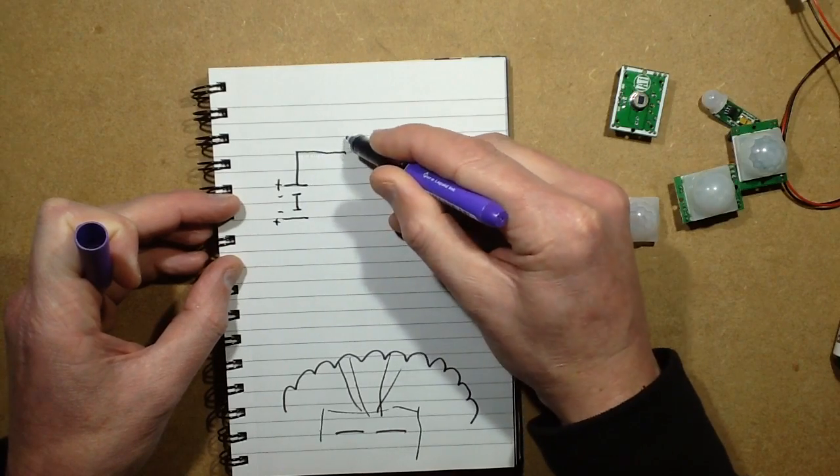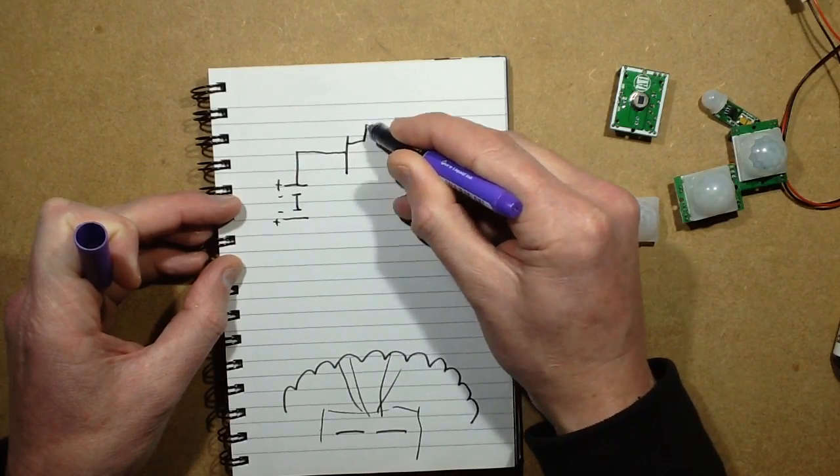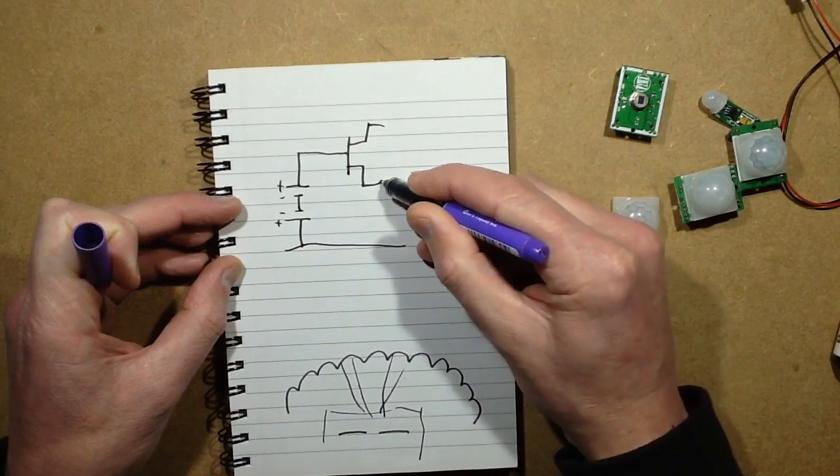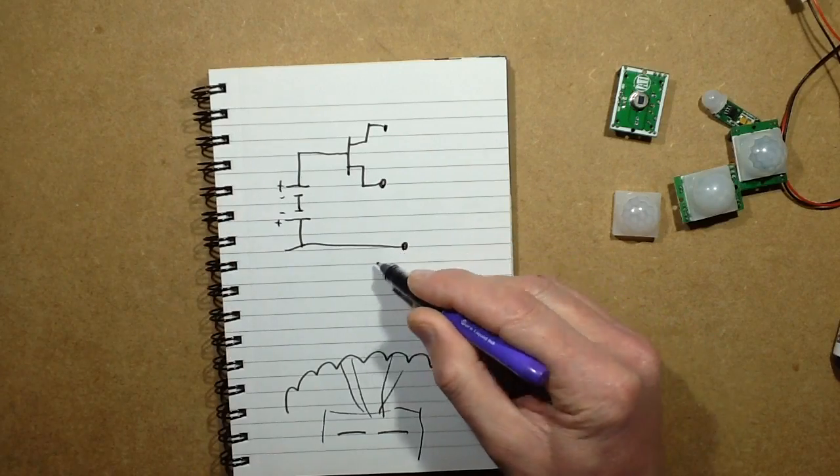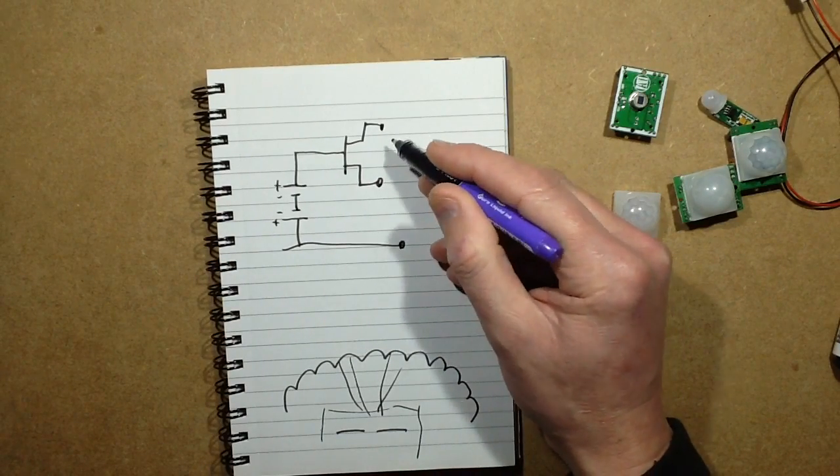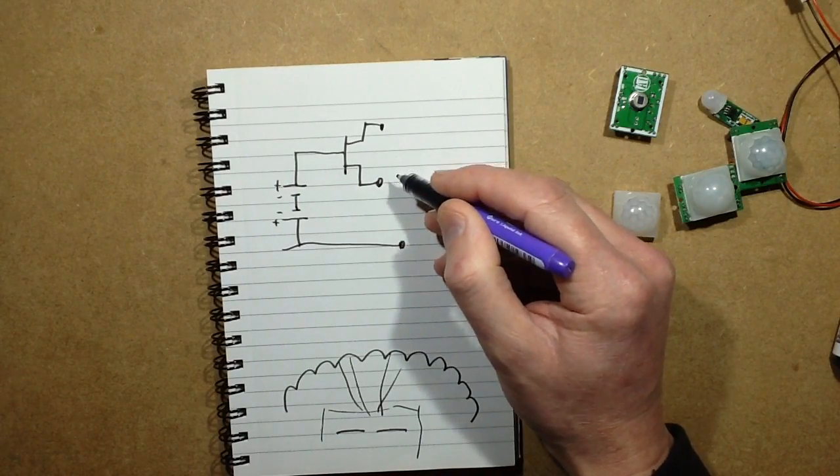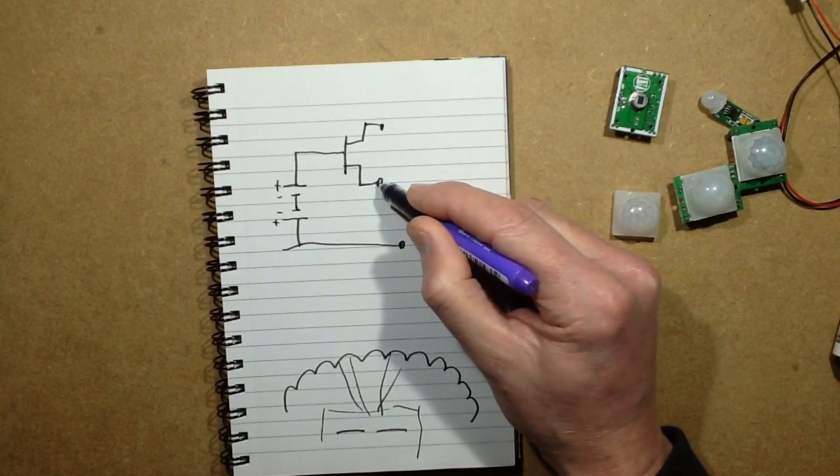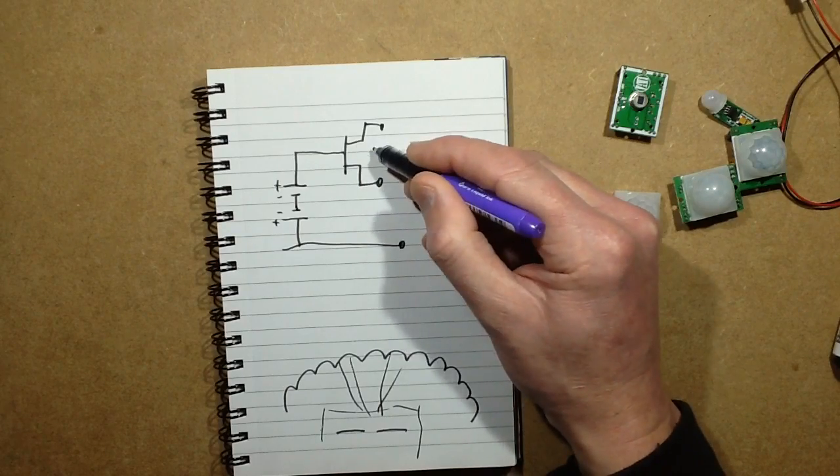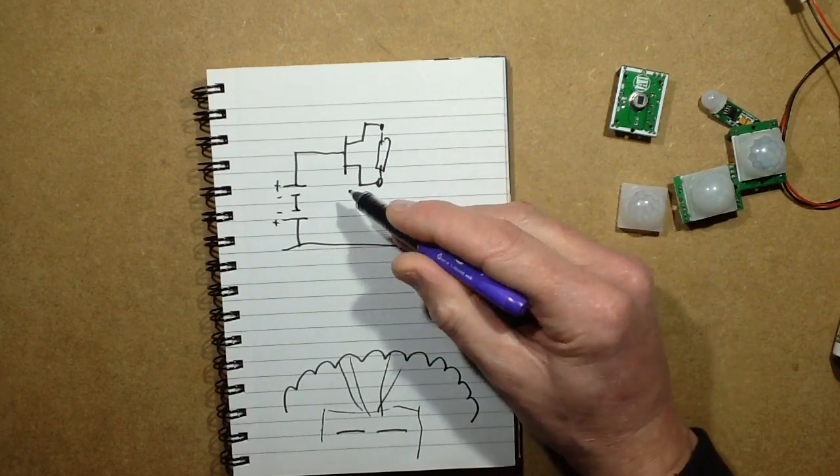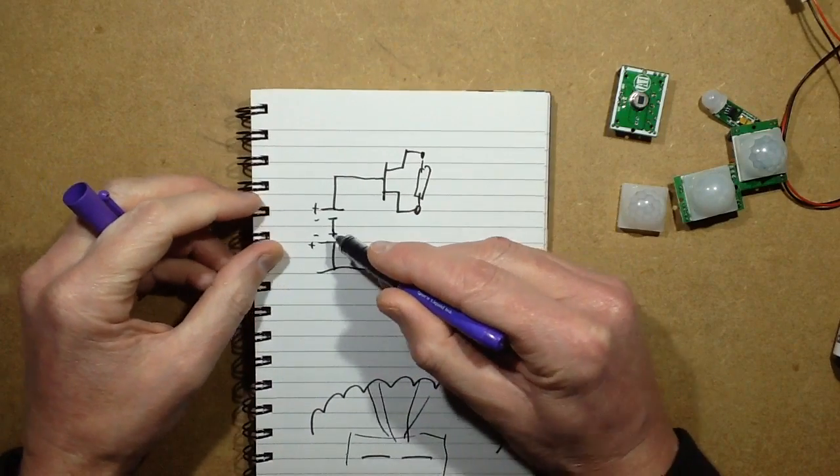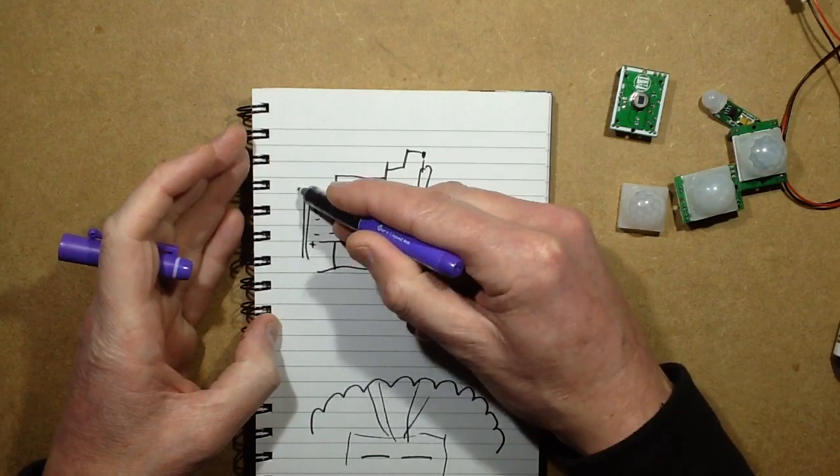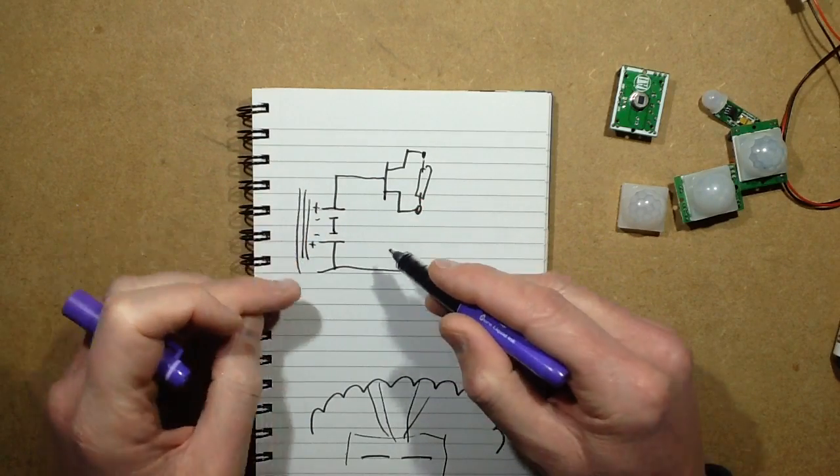They're feeding into a field effect transistor. That's why there's three pins in these - they've got a common ground, a positive, and the output which will effectively act as almost like a variable resistor. The reason for the two opposing pyroelectric sensors is that whatever ambient energy is coming in will affect both of them and they'll cancel each other out.